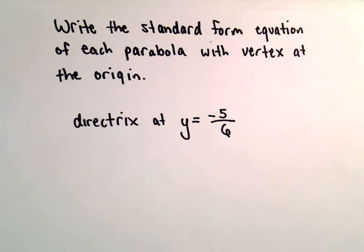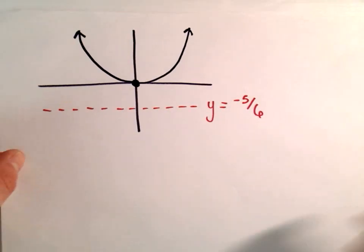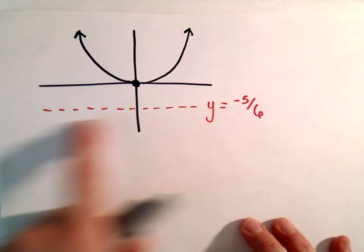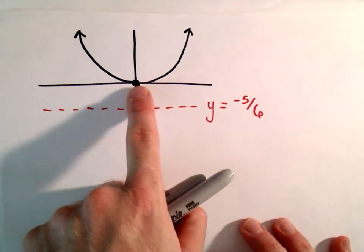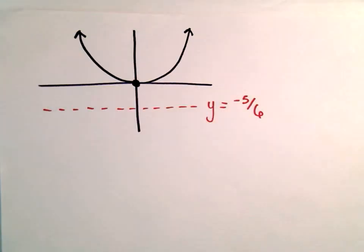And again, you don't have to, but I have already sketched a little graph that corresponds to the information that we're given. So there's our directrix, y equals negative 5 over 6. We know that the vertex is at the origin, and that would tell me that my parabola would have to be opening upwards in this case.